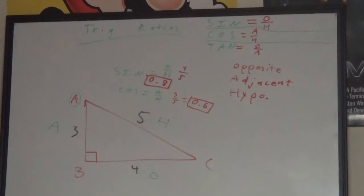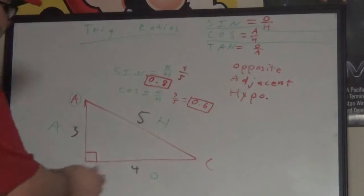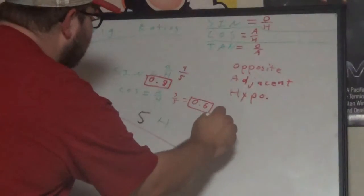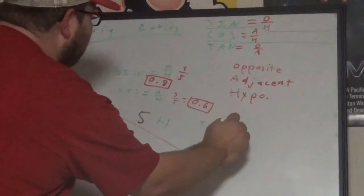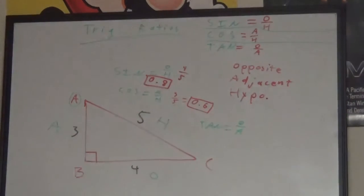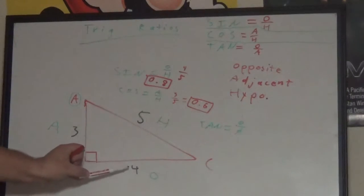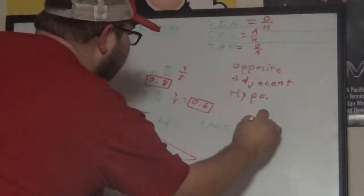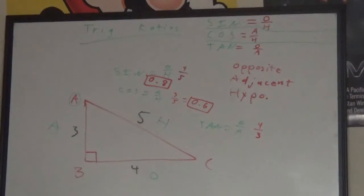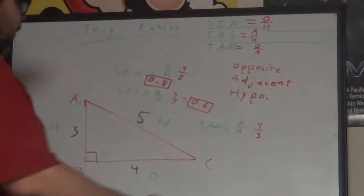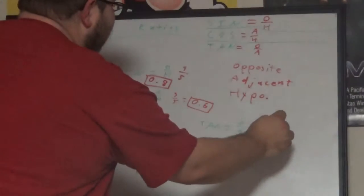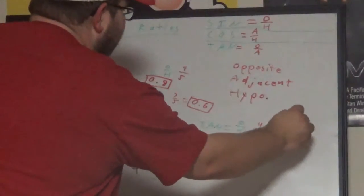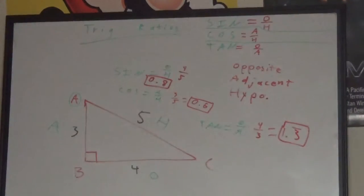And the last one is tangent. Tangent is the one that does not use the hypotenuse, but that's just fine. Tangent equals O over A, opposite over adjacent. Our opposite is four and our adjacent is three. Put it in a calculator if you need to - we'll get 1.3 repeating, and that is the trig ratio.